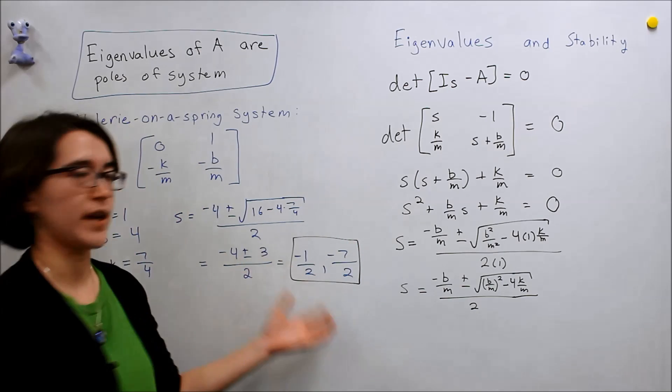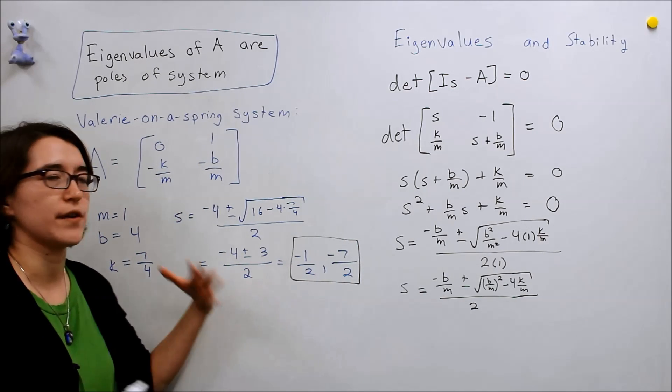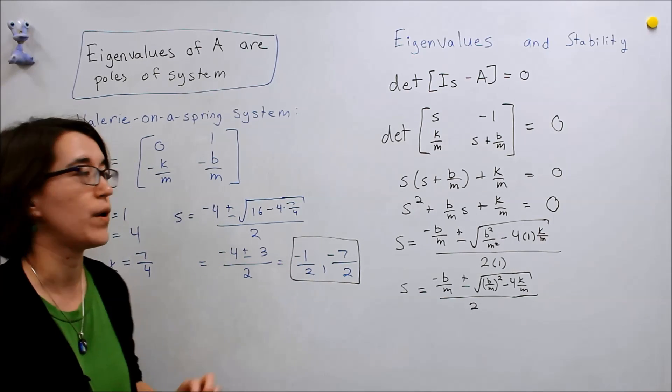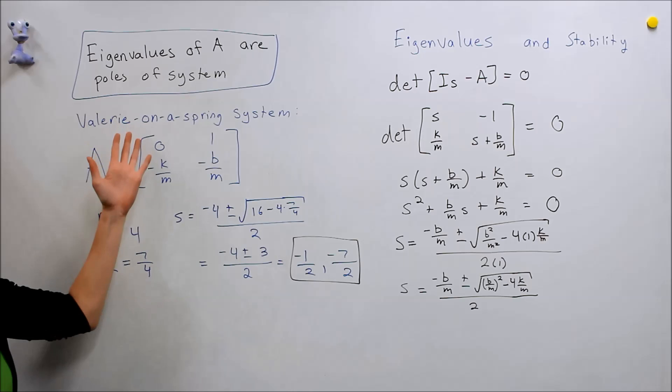And we look at if they are positive or negative, are they in the left half plane? They are both real and negative, so we know that with these values, the system is stable.